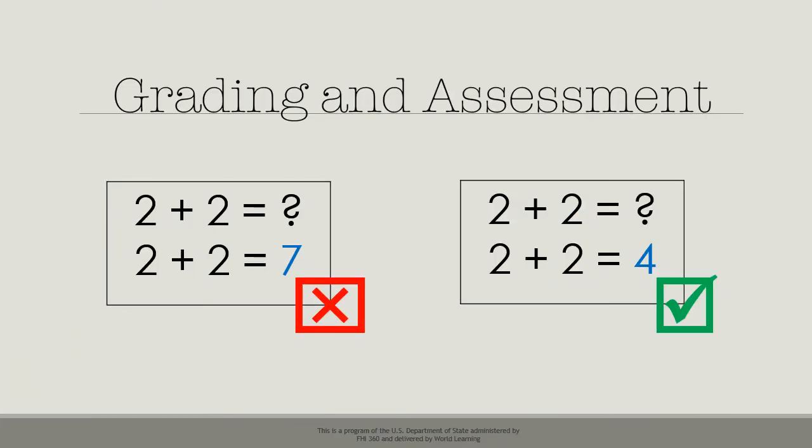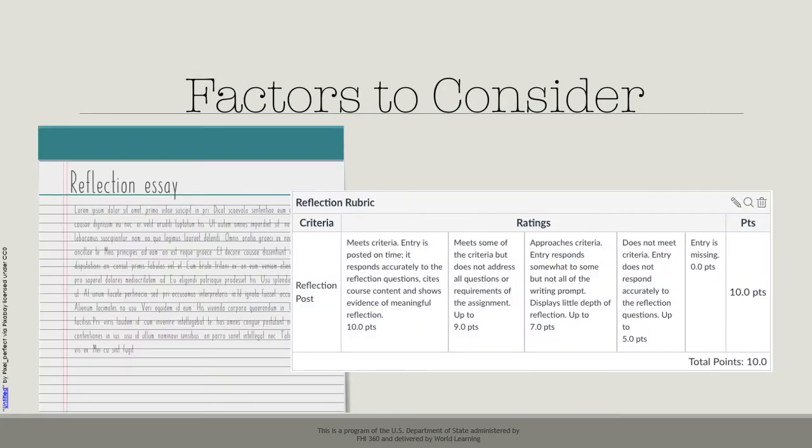Some assignments are easy to assess. When there is one right answer, grading can be fairly simple. For complex tasks we need to consider several factors. This is when a rubric can be very useful.